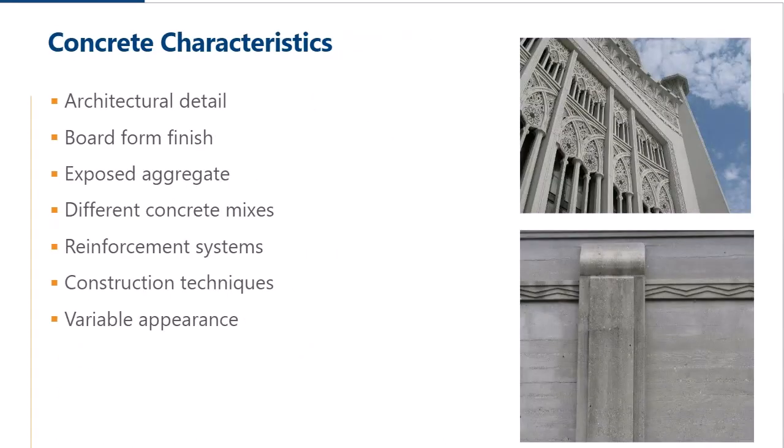The defining characteristics of concrete — what is important and how will it affect repair work — include architectural details that are infinite and variable: fine details, finishes, board-form finish, different mixes which create different colors and exposed aggregates, the reinforcement and construction techniques, and the existing surface, which will undoubtedly have a variable appearance. Anne will discuss some of the techniques used to match this in the second half.